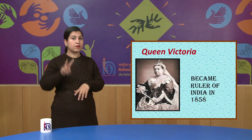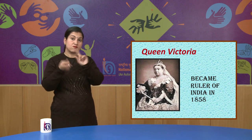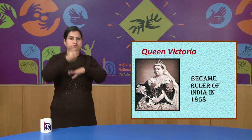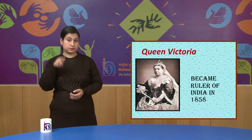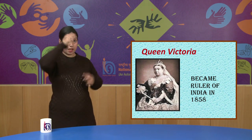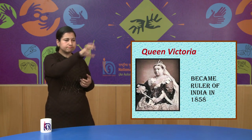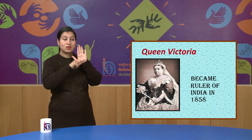Although the revolt failed, the British government was forced to change its policies. In the year 1858, the rule of the East India Company was ended, and in its place Queen Victoria of England became the ruler of India. She assured the Indian rulers that their states would not be occupied by the British under the policy of lapse.